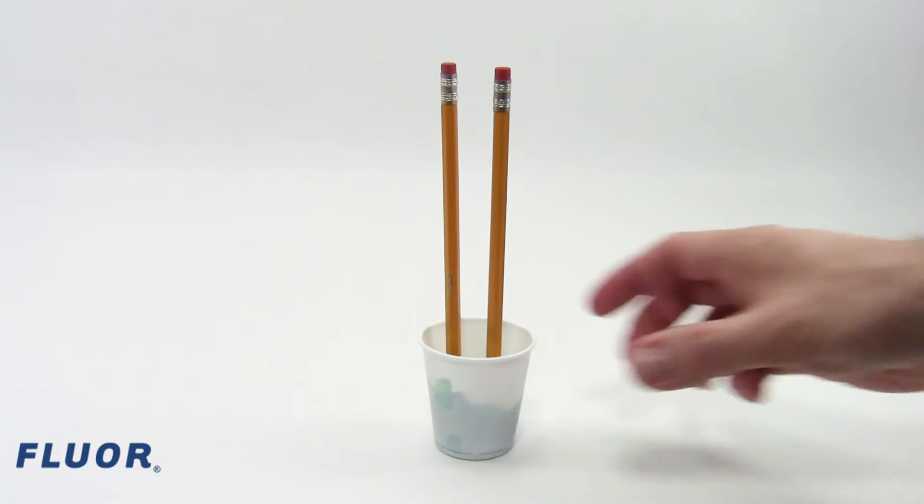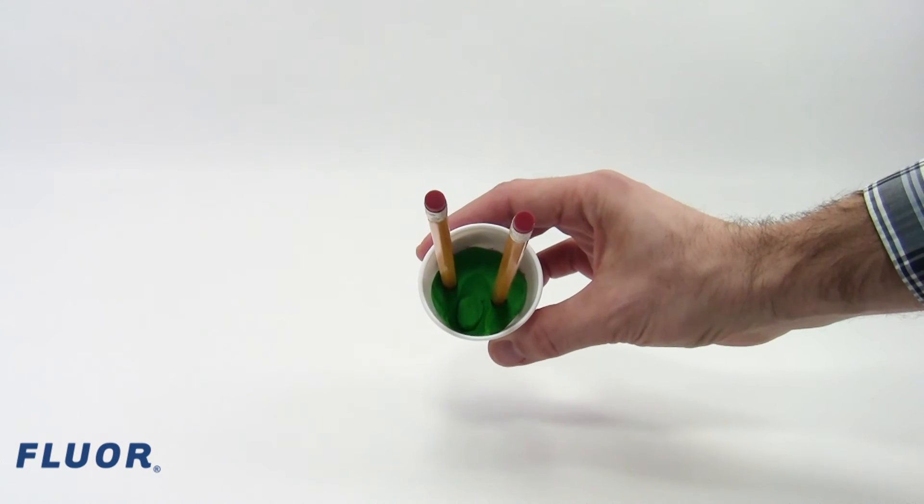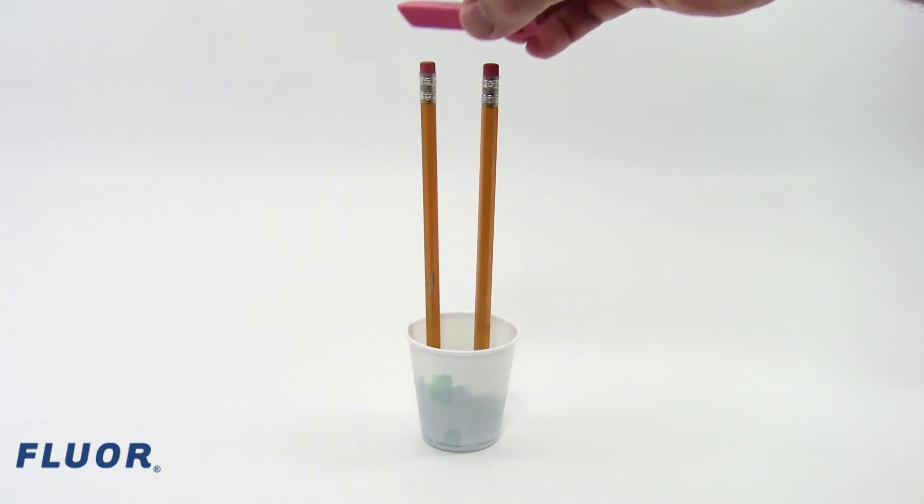The wicket is made from two pencils stuck into a 2 ounce cup that is half filled with modeling clay. The eraser is balanced on top of the pencils.